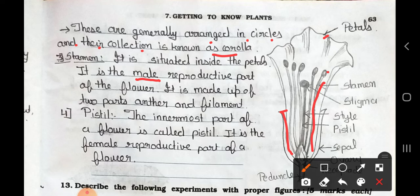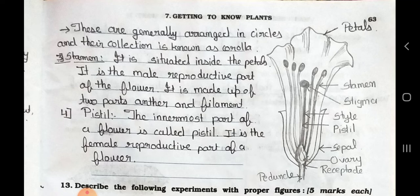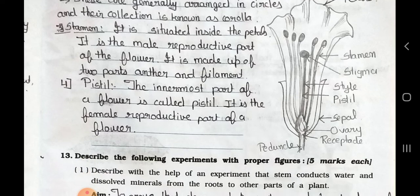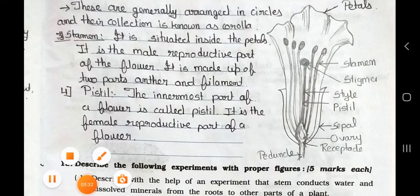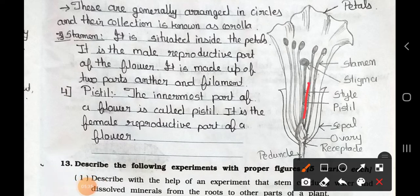Number 4, pistil. This one is the main one. It is the pistil. The innermost part of a flower is called pistil. It is the female reproductive part of a flower. See, here is the diagram. This one is the style. This one is the pistil. This one is the stigma and stamen. Here is the panducle. It is the ovary. Here is the sepal. It is a leaf-like structure.